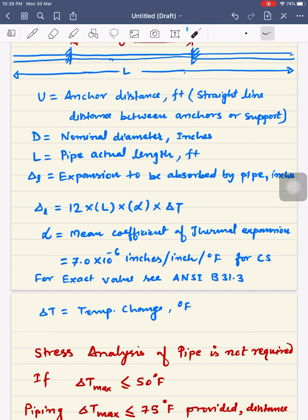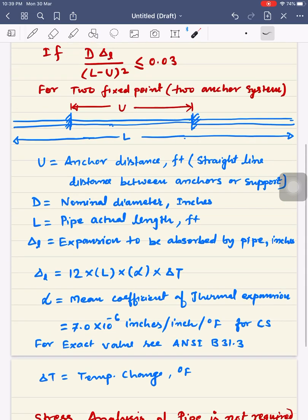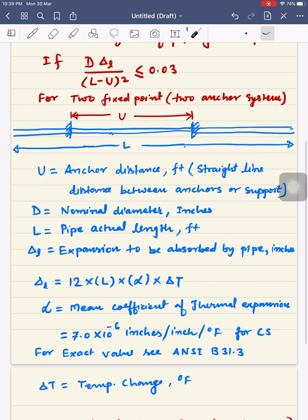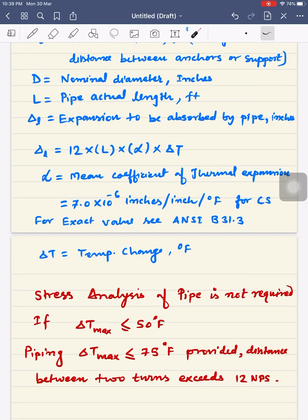When fluid is flowing through the pipe and the temperature variation is there, the pipe will have thermal expansion. Because of that, the pipe may expand. This alpha value is around 7 times 10 to the power minus 6 inches per inch per degree Fahrenheit for carbon steel.